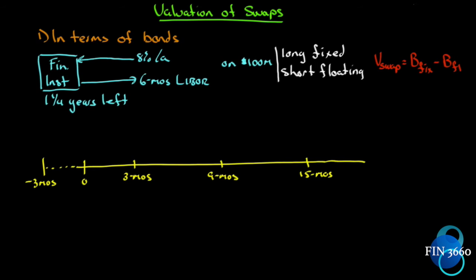Let's value a swap with this setup. We have a financial institution on one side of a swap with a notional amount of $100 million. It is the LIBOR payer — it will pay six-month LIBOR and receive the fixed rate of 8% per annum paid semi-annually. Because it's receiving fixed and paying LIBOR, it is long the fixed and short the floating. So the value of the swap is the value of the fixed rate bond minus the value of the floating rate bond.